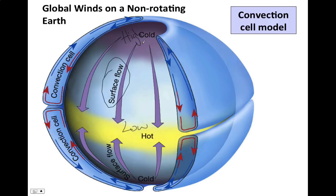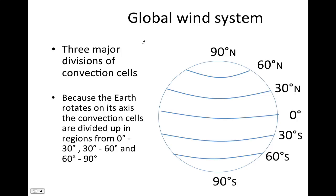The Earth does rotate, so our global wind patterns are a bit more complicated than that. Because the Earth rotates, we end up with convection cells that occur and move air through certain latitudes. There is a convection cell between 0 and 30 degrees latitude, one between 30 and 60 degrees latitude, and finally one between 60 and 90 degrees latitude. The convection cells in the northern hemisphere are mirror images of the southern hemisphere cells, so in total we have six convection cells in our atmosphere.